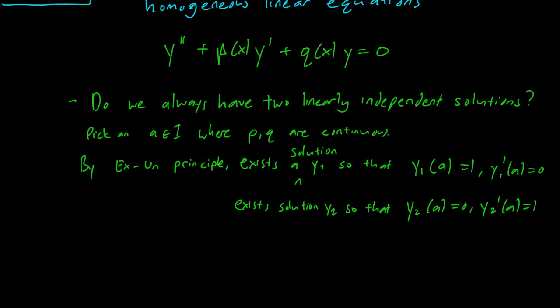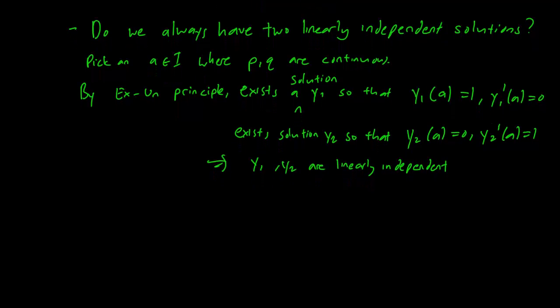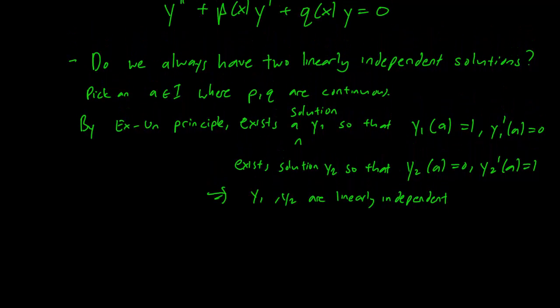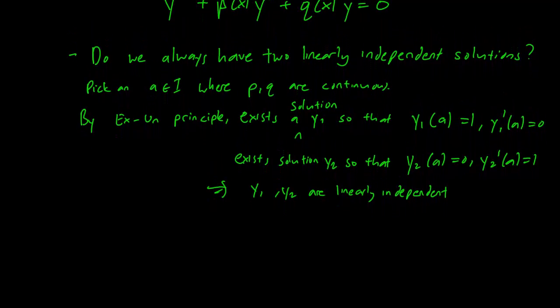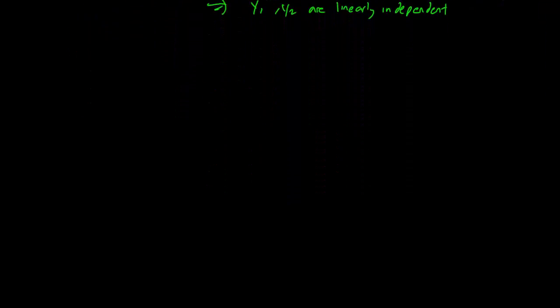And it's pretty easy to see just from this point, this single point, that y1 and y2 cannot be a multiple of each other. So y1 and y2 are linearly independent.